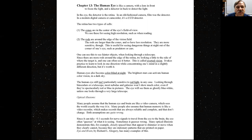The retina has two types of cells. The cones are in the center of the eye's field of view. We use these for seeing high resolution, such as when reading. The rods are around the edge of the vision field. The rods are larger than the cones and so have less resolution. They're more sensitive, though. They're useful for seeing dangerous things at night out of the corners of one's eyes, such as predators or cars.